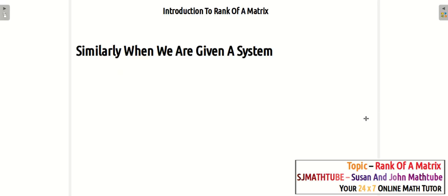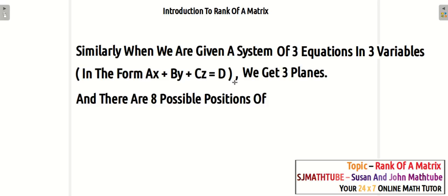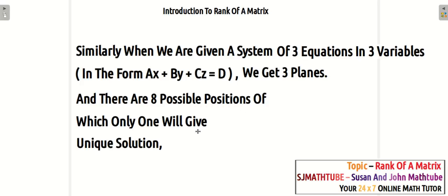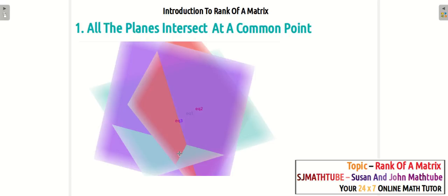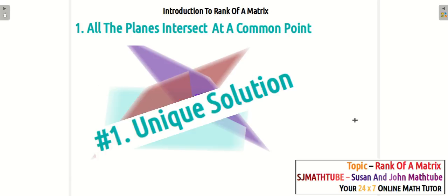Now let us think about a system of three equations in three variables. An equation in this format will represent a plane. When we have three equations in three variables, we get eight possible positions, and only one will give a unique solution. For example, with three equations of planes, you can see the common point — that gives a unique solution.